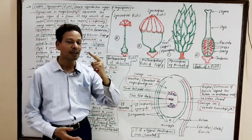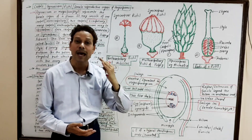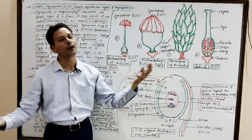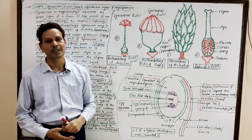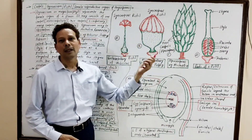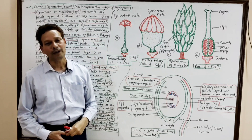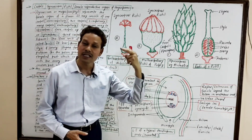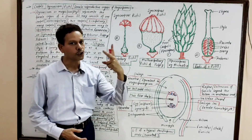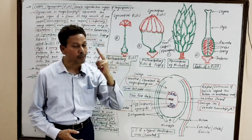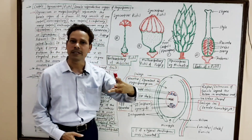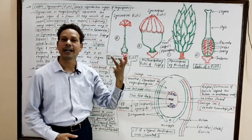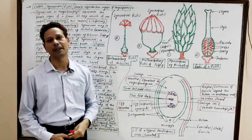The gynoecium, that is the megasporophyll, represents the female reproductive organ of angiosperms. The gynoecium may consist of one carpel — the condition is monocarpellary; two carpels — bicarpellary; three carpels — tricarpellary; five carpels — pentacarpellary.